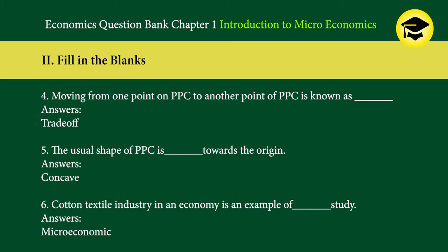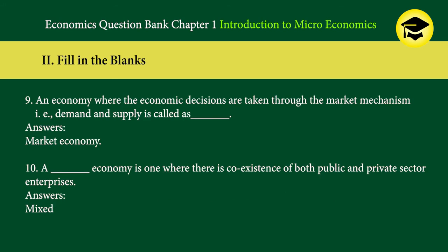4. Moving from one point on PPC to another point on PPC is known as blank — answer: trade-off. 5. The usual shape of PPC is blank towards the origin — answer: concave. 6. Cotton textile industry in an economy is an example of blank study — answer: microeconomic. 7. Blank is a schedule that shows various combinations of two goods which can be produced by an economy with given resources and technology — answer: production possibility schedule.